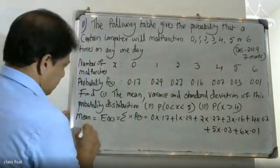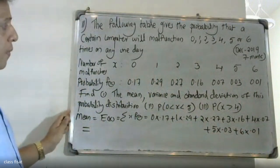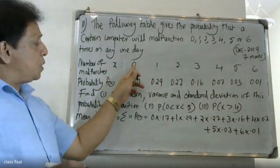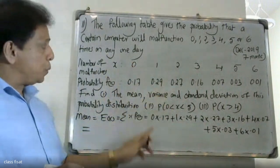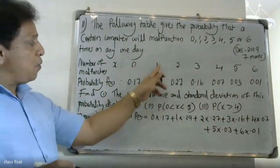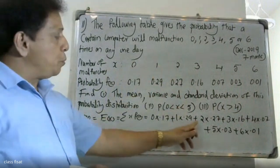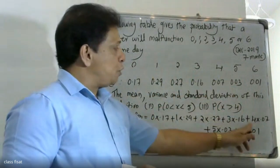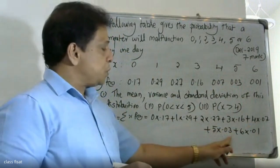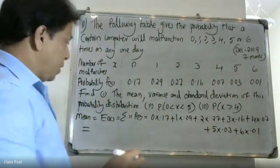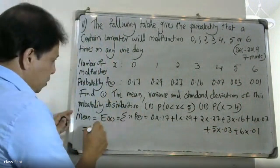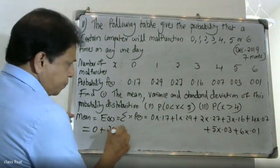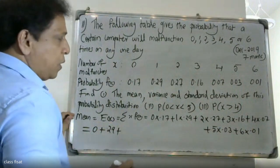Computing each term: 0 into 0.17 = 0, 1 into 0.29 = 0.29, 2 into 0.27 = 0.54, 3 into 0.16 = 0.48.